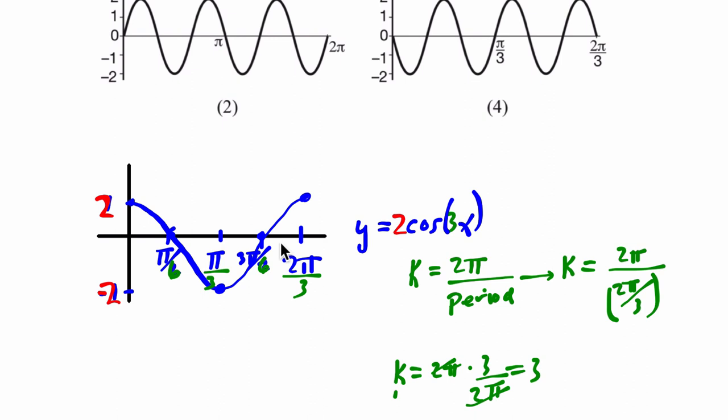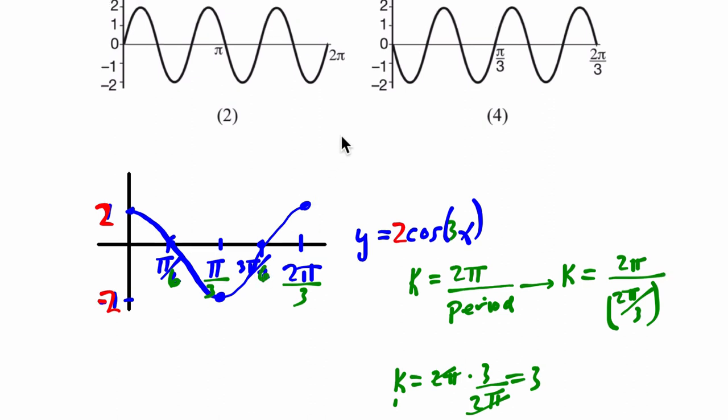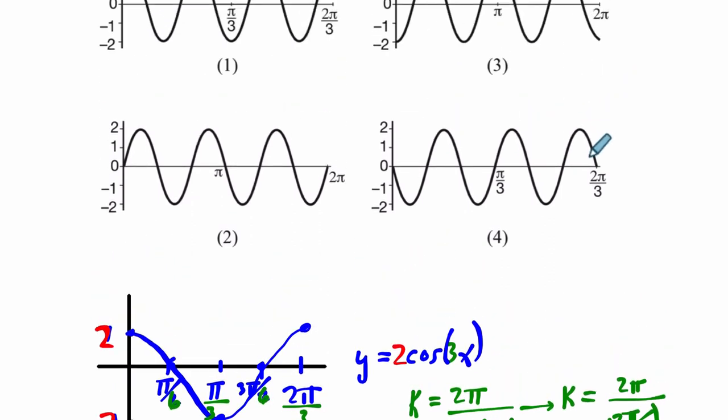All right. Well, what that also means is that it takes 2 pi over 3 to complete one cycle. But if we look at all of our options here, there's a 2 pi over 3, but there's several cycles that are completed here. So I'm going to cross that out. Same thing here. Several cycles are completed there. And here in these 2 choices,